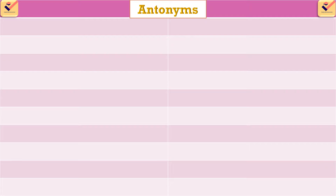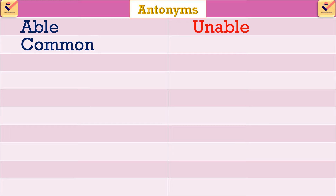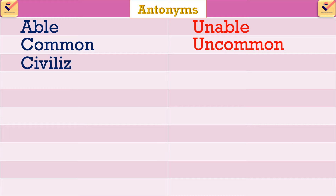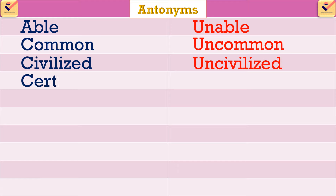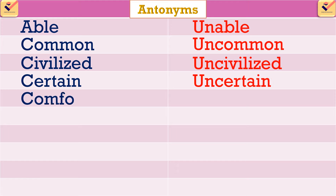Antonyms using the prefix 'un': able – unable, common – uncommon, civilized – uncivilized, certain – uncertain, comfortable – uncomfortable.